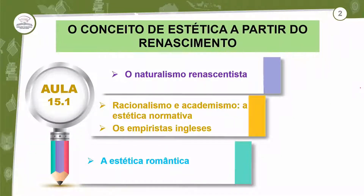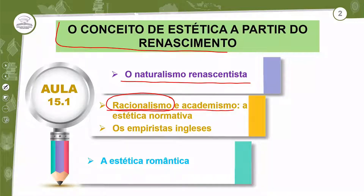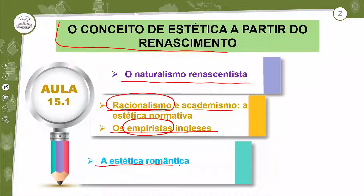Vamos verificar o que temos para a aula de hoje. O conceito de Estética a partir do Renascimento é o tema da nossa aula. Dentro desse tema, iremos trabalhar o Naturalismo Renascentista, o Racionalismo e o Academismo, a Estética Normativa. Quando formos trabalhar o Racionalismo, já trabalhamos esse tema lá em Teoria do Conhecimento, da mesma forma que trabalhamos o Empirismo. Só que agora vamos jogar essas teorias dentro do campo da Estética. Iremos trabalhar também a Estética Romântica.